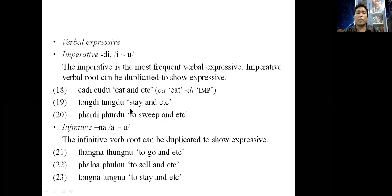In partial reduplication, we have verbal expressives like imperative marker. The imperative marker is di. The imperative marker e changes to u. The imperative is the most frequent verbal expressive. Imperative verbal root can be reduplicated to show expressives. Examples 18 to 20: chadi chudu 'eat and etc.', tongdi tongdu 'stay and etc.', phardi phurdu 'sweep and etc.', where the imperative root changes in the reduplicant, that is, it assimilates to u.